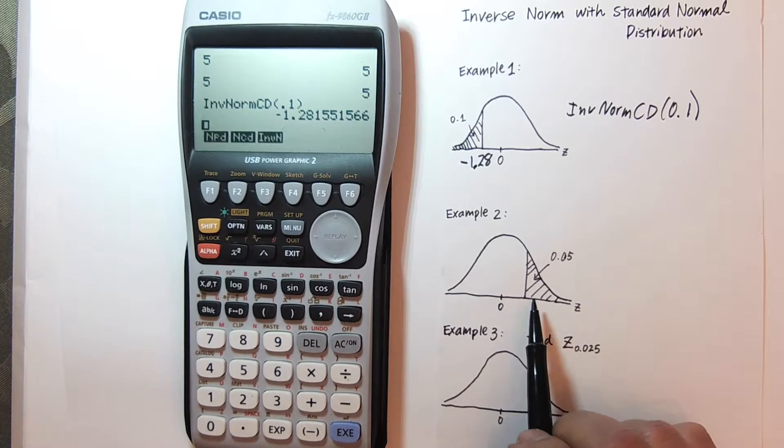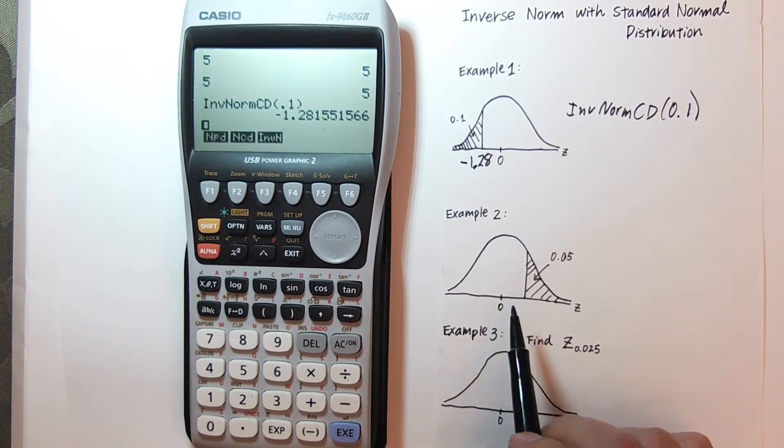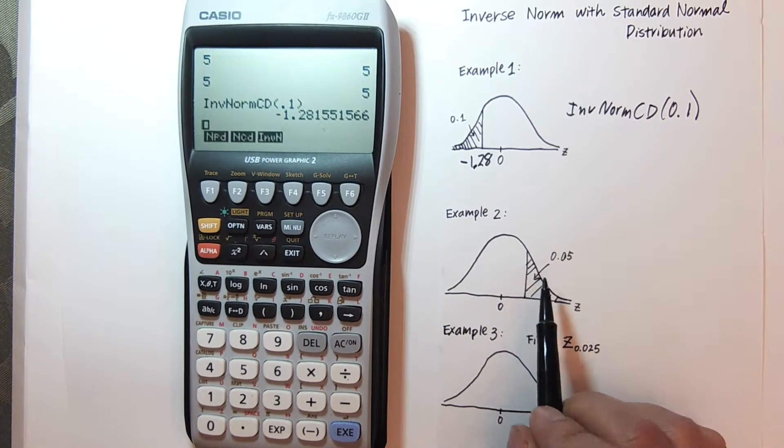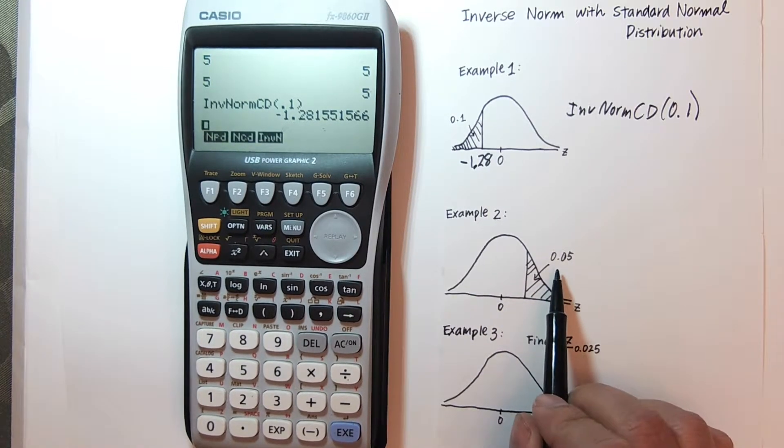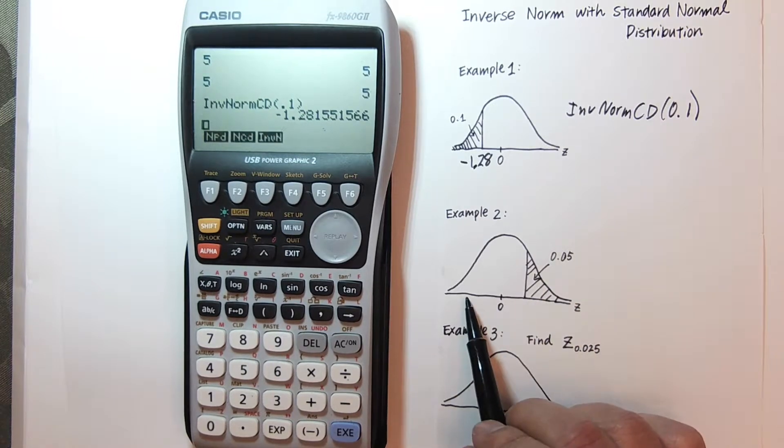And for next example, we have area to the right. So what we're going to have to do is sort of trick the calculator into finding the area to the left so we get the proper Z score. If I just put in inverse norm 0.05, it will give me the negative version of it over here.